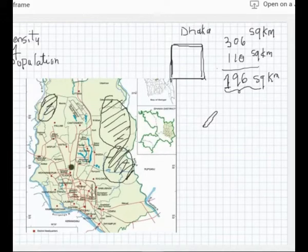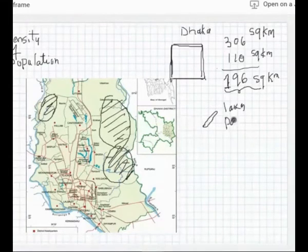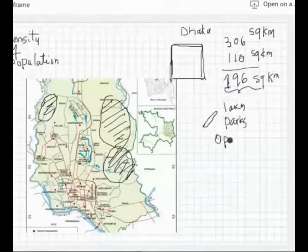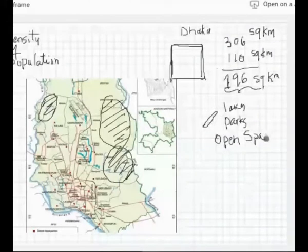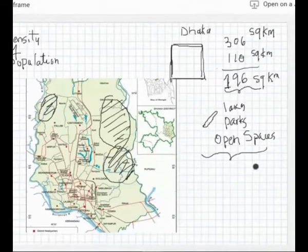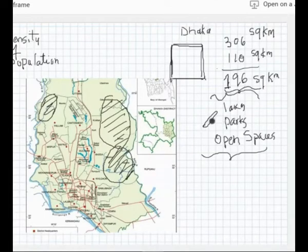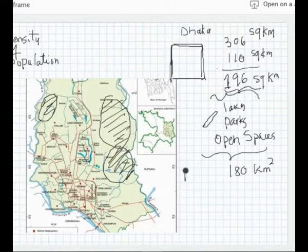Even if you look into this area, people do not live in lakes or rivers. Lakes are excluded, rivers are excluded, parks are excluded, open spaces are excluded. Markets, business areas—another four to five percent area is gone. So let's take it as 80 square kilometers. This is the real usable economic area of Dhaka.